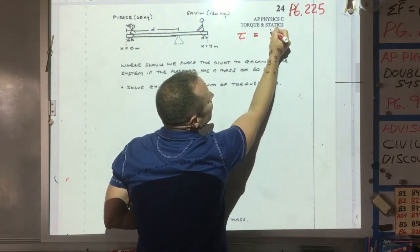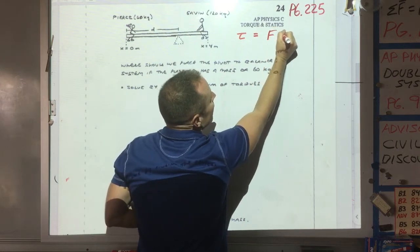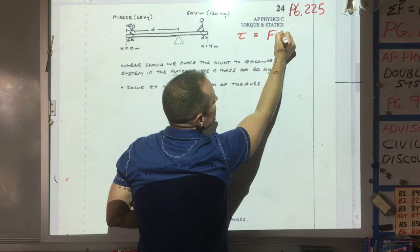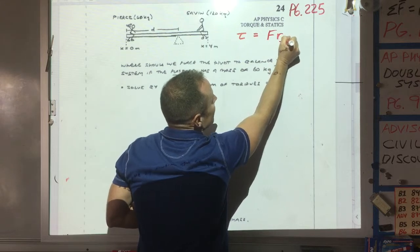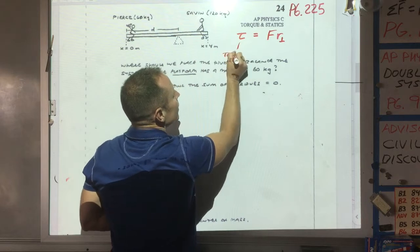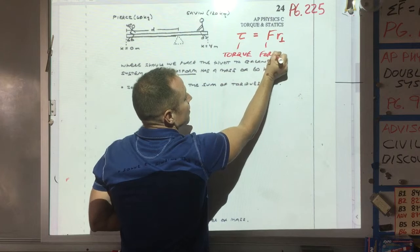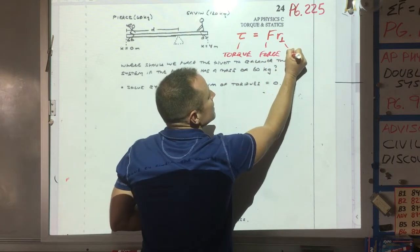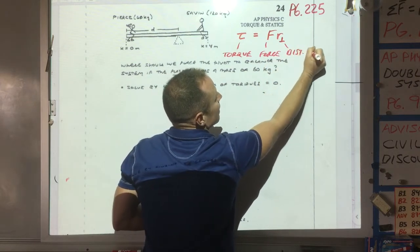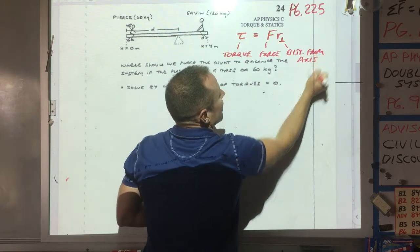But what we're going to use for now is that torque is force times a distance from an axis. I'm going to call it FR perp. So this is the torque, what's called torque. This is force, and this is going to be a distance from an axis.